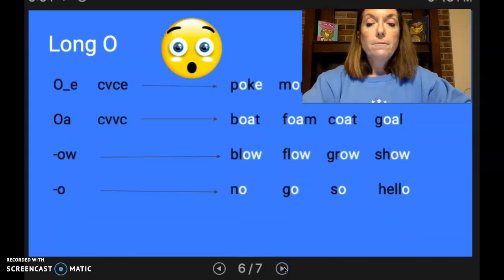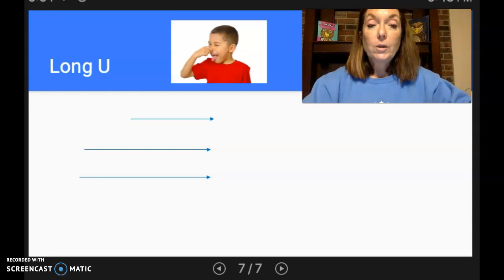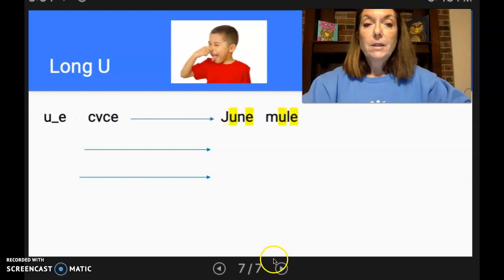Our last vowel is long U. And I call this the stinky smell sound, ooh, because it can say ooh, or it can say its name U. It depends on the word. So let's look at these words. And our first spelling is U blank E, the silent E. And we have the words June and mule.